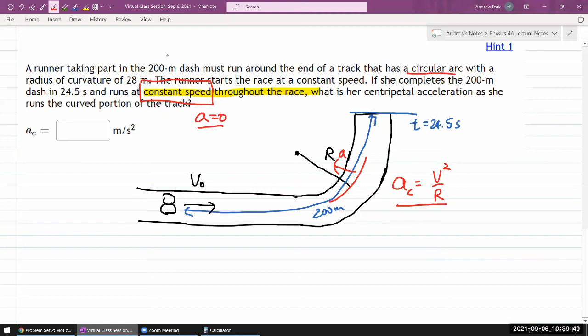So we are given the radius of curvature—that's great, we'll be using R. We are not given V directly, but we are given that she's completing the 200-meter dash in some amount of time, and we're assuming she's running at constant speed. So we can write V as distance divided by time. The centripetal acceleration of the runner in the curved portion will be...